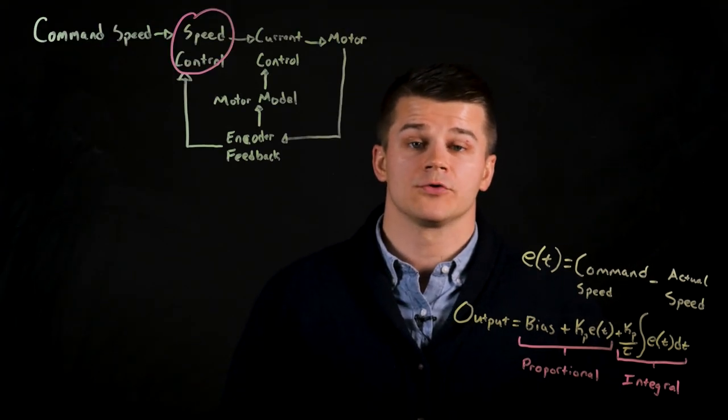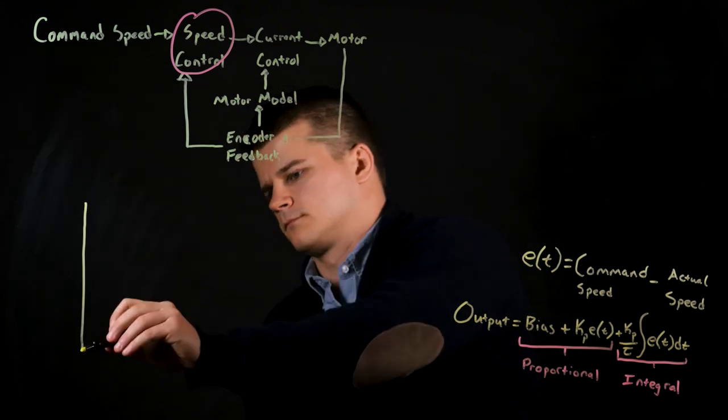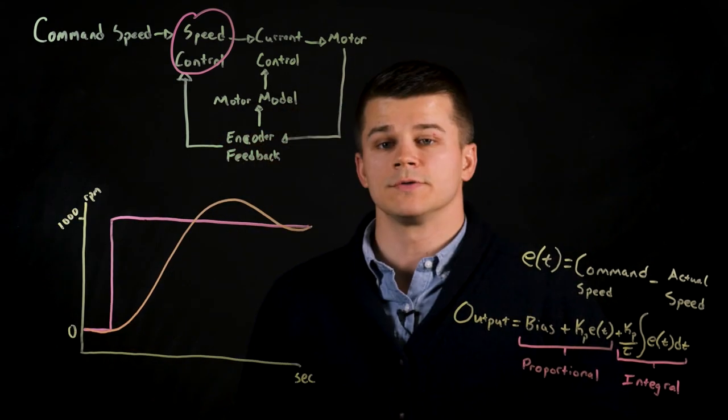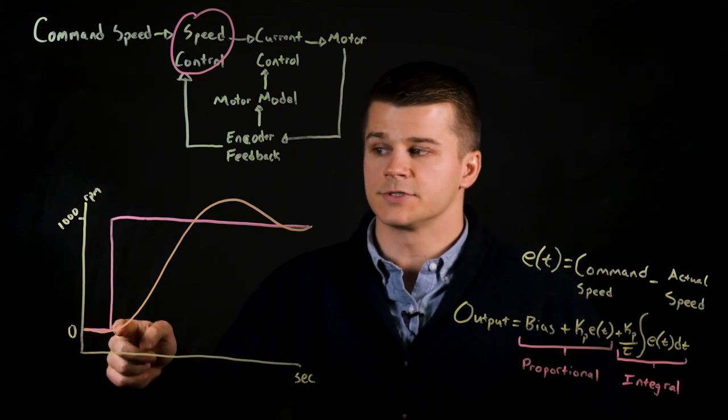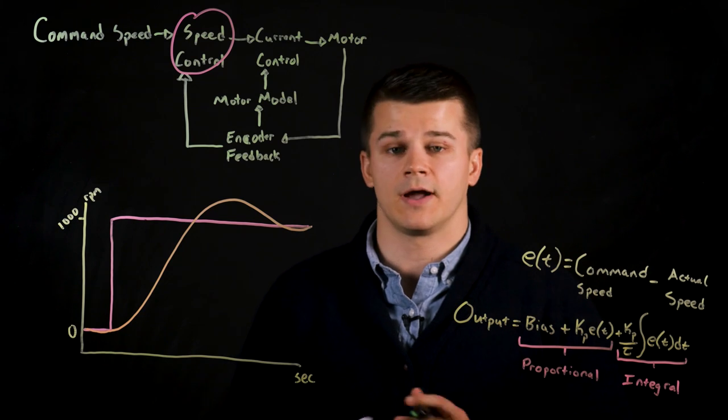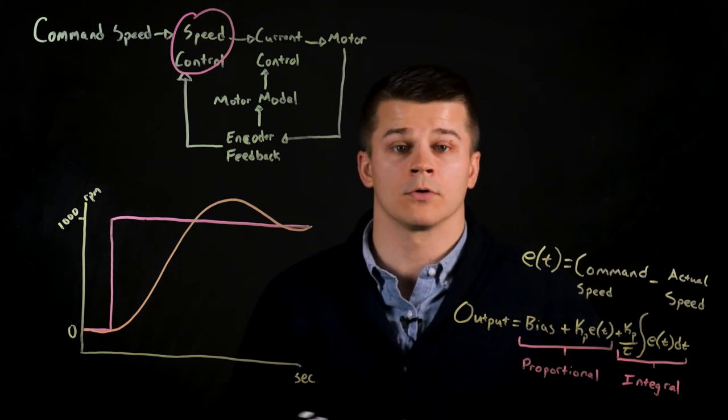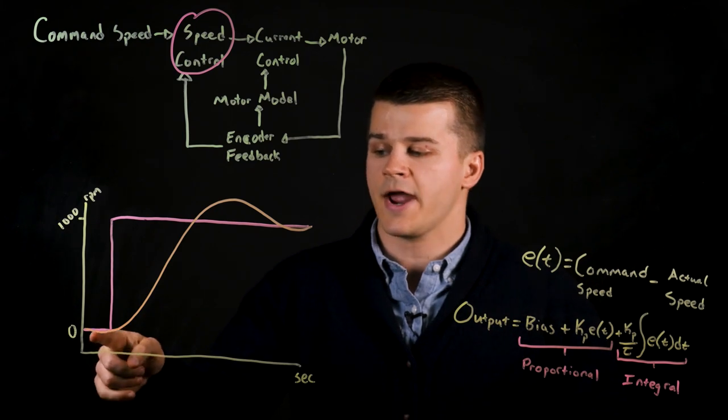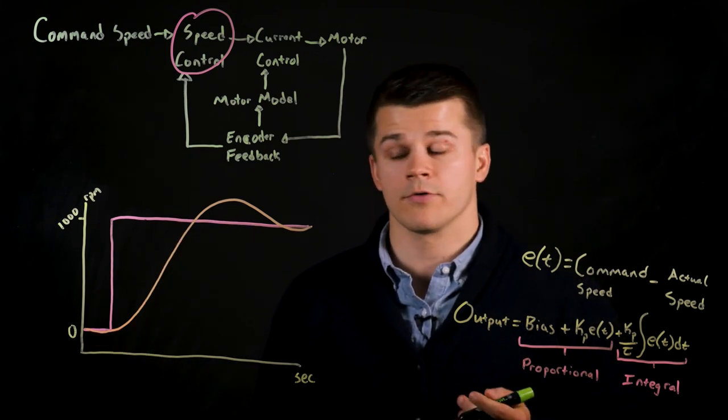Next we'll see how the PI controller is implemented by looking at a graph of the command and actual speed. So in this graph you can see in pink the command speed jump immediately from zero to a thousand RPM and then stay constant. However, due to real-world factors such as high inertia or current limits, your orange actual speed won't be able to perfectly follow the command speed, thus an error is introduced.